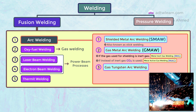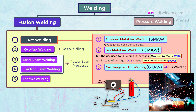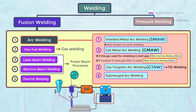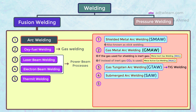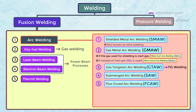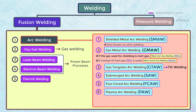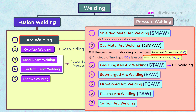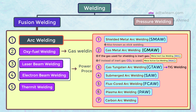Third, we have Gas Tungsten Arc Welding, shortly called GTAW, popularly known as TIG welding. Fourth, we have Submerged Arc Welding, shortly called SAW — here the arc is submerged in flux to protect the metal from the atmosphere during welding. Fifth is Flux Cored Arc Welding, shortly known as FCAW, where there is flux in the filler material. Sixth is Plasma Arc Welding, shortly known as PAW. And lastly, Carbon Arc Welding. These are the different types of arc welding processes and the classifications of fusion welding.